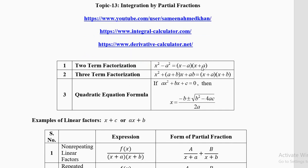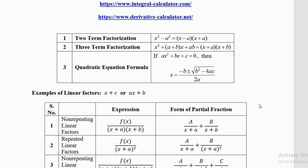Let's recall the two-term factorization: x² minus a² equals (x minus a)(x plus a), and the three-term factorization: x² plus (a+b)x plus ab equals (x plus a)(x plus b). If the factors are not given in the question, we shall use these factorization formulas to get the factors.